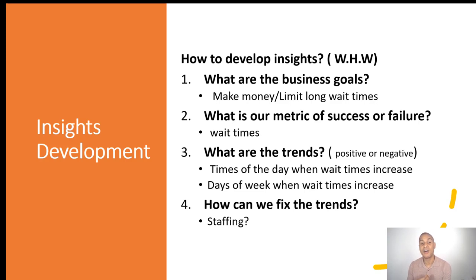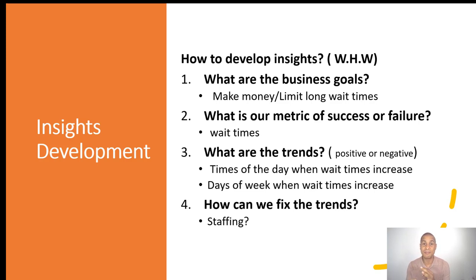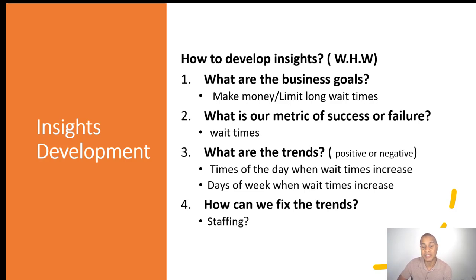Find out your metric of success or failure immediately. For this analysis, wait times is our metric of success and failure. If they hadn't specified, we could be looking at revenue, patient count, doctors, or staffing. But knowing that wait time is the metric makes our analysis very focused. What are the trends, positive or negative? For example, do wait times increase or decrease during the day, or on certain days of the week? And how do we fix this problem — is it staffing, or something else?